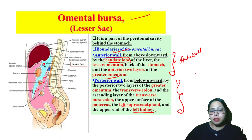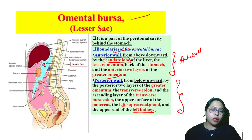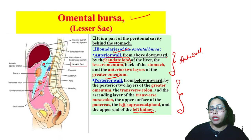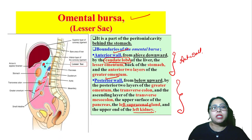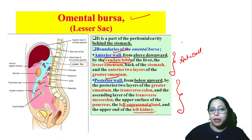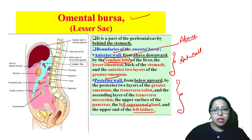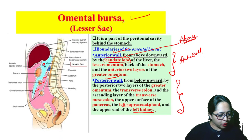In the anterior wall, a very important question is the caudate lobe. Many people think it is the liver as a whole, but it is specifically the caudate lobe. The caudate lobe is the one which is above — that is what is related to the lesser sac, not the one which is below.